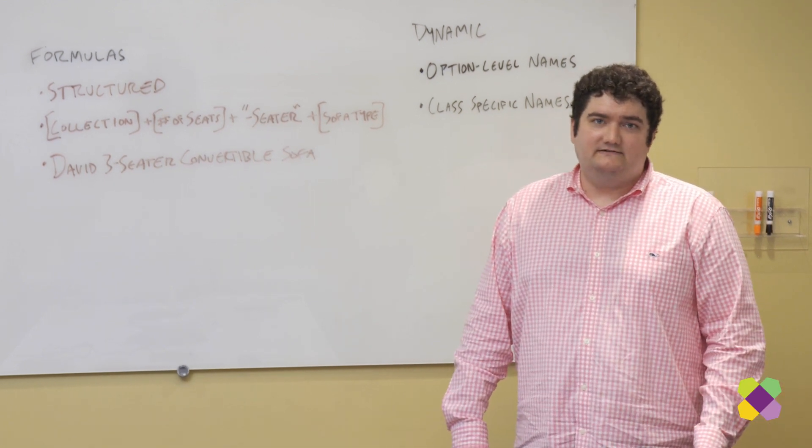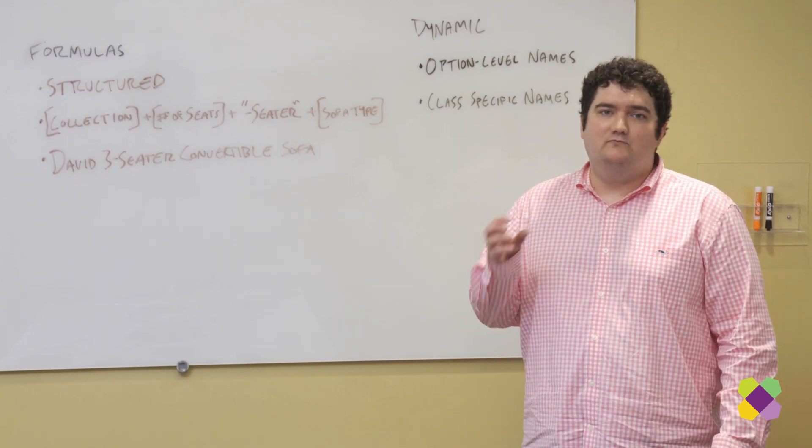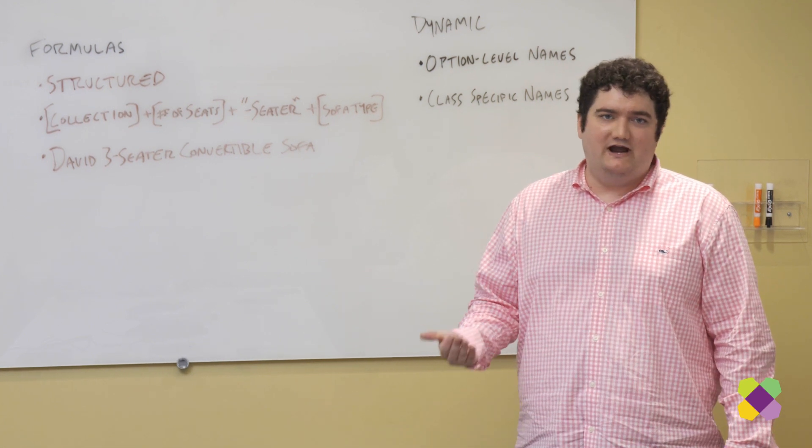Another example is double classing. At Wayfair we'll sometimes put products in multiple categories because we realize that people shop for them in a variety of ways.